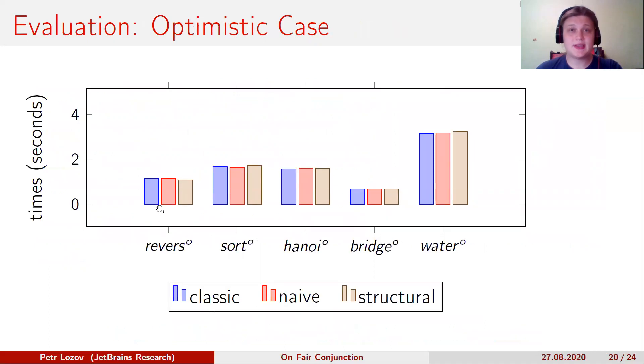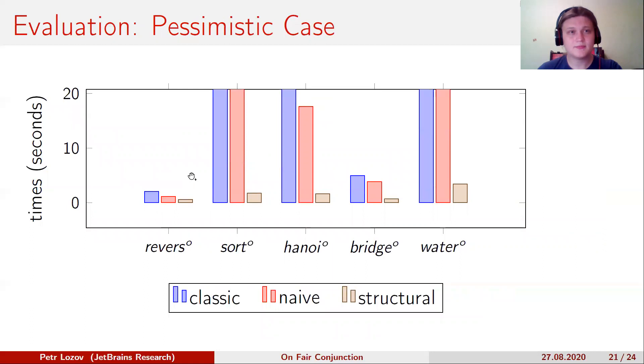In the optimistic case, the fair conjunction produces additional computation, which adds small overhead. However, in the case of list reversing, the fair conjunction by structural recursion has better performance. Thus, dynamic conjunct switching can improve performance even in the optimistic case. It's interesting.